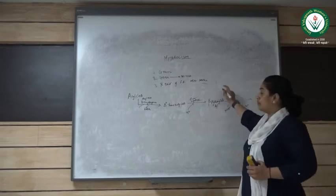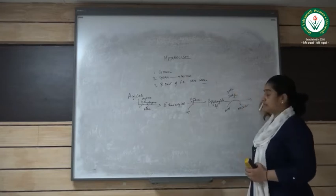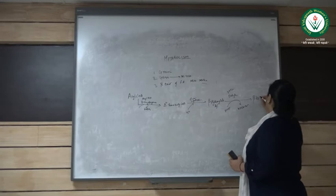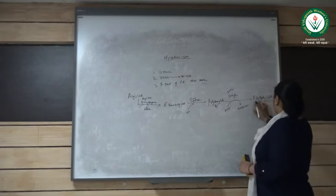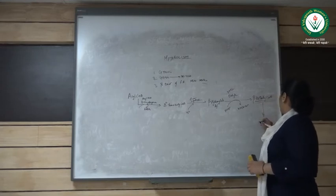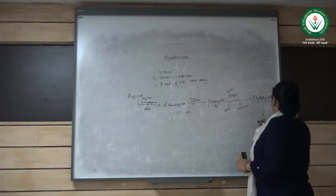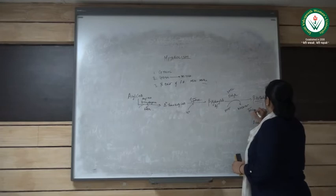With the help of enzyme beta-hydroxy acyl coenzyme A dehydrogenase. And the molecule what we get is beta-keto acyl coenzyme A. This beta-keto acyl coenzyme A then undergoes cleavage and finally formation of acetyl coenzyme A plus acyl coenzyme A with the help of enzyme thiolase.